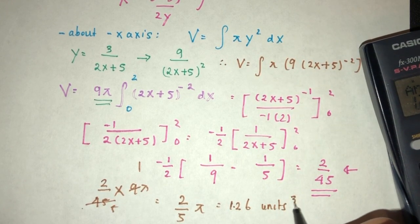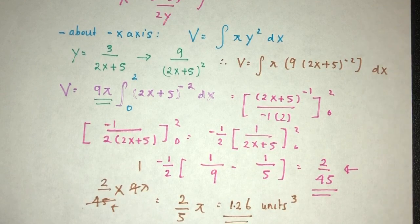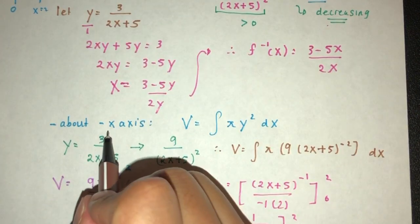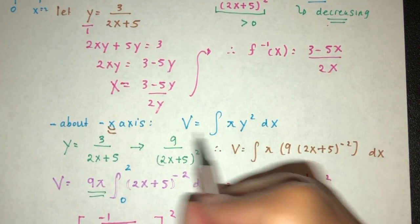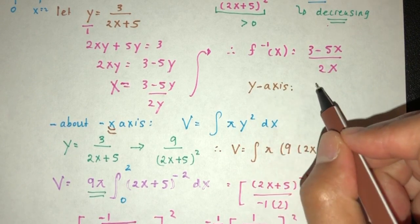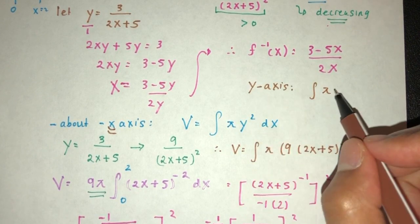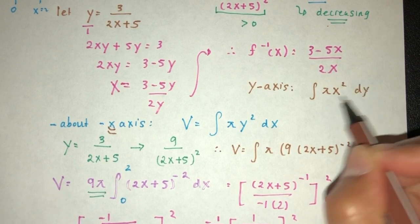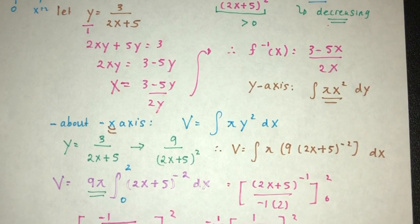That should be units cubed for the volume of the shape that we get after rotation. Again, the main thing we have to know here is, if you want to rotate it about the x-axis, we have to use this formula. If it was about the y-axis, you will use the other formula, which is this. Here we have y. We have to write x squared here. This is the other way around.